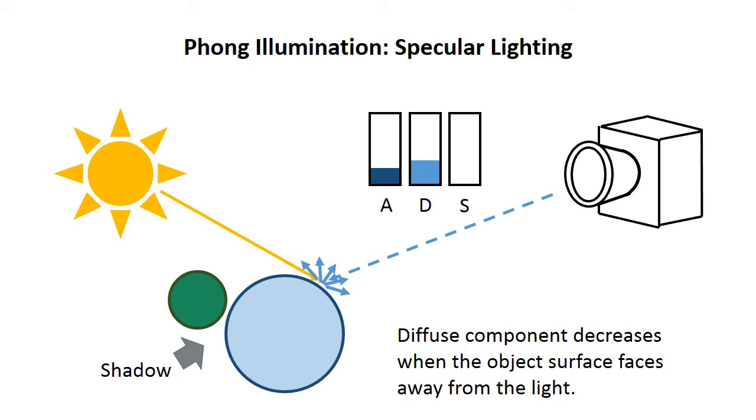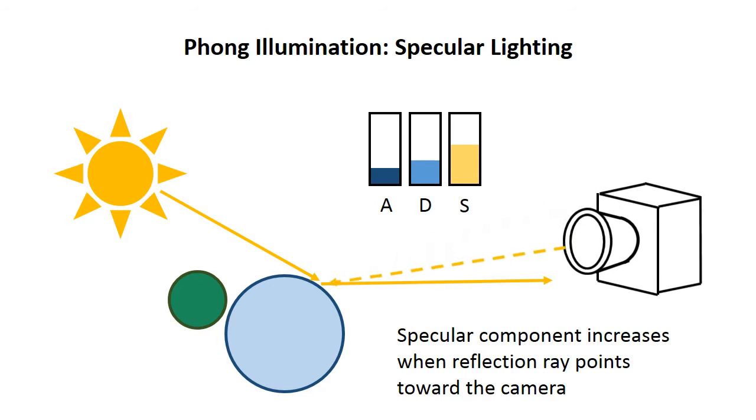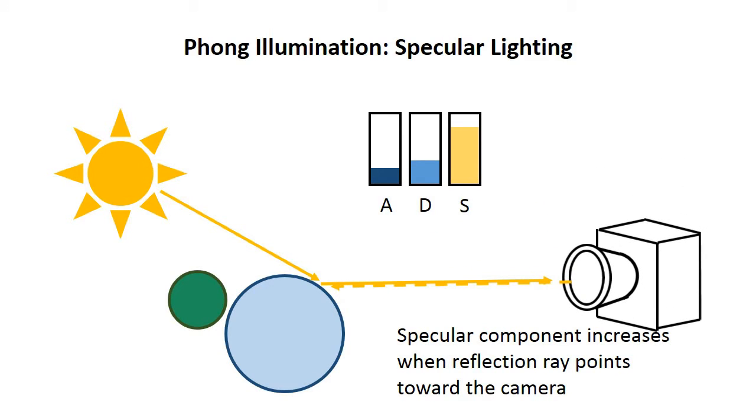The last component is specular, and it represents light that's reflected across an object's surface. What's interesting about it is that it actually increases depending on the angle between the reflection of the light and the eye of the camera. So if the eye is looking directly at the specular spot, you have a very bright color.